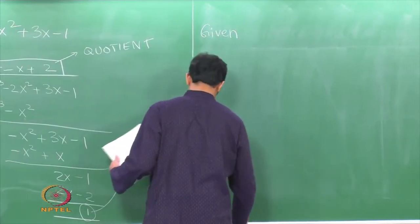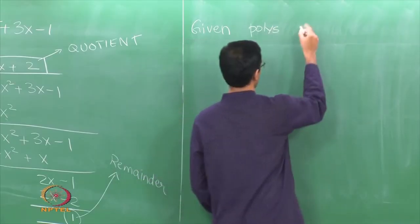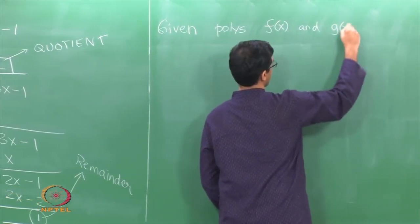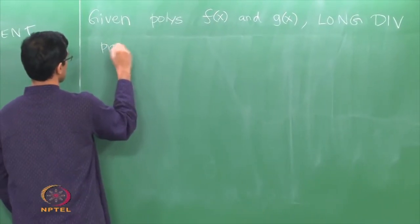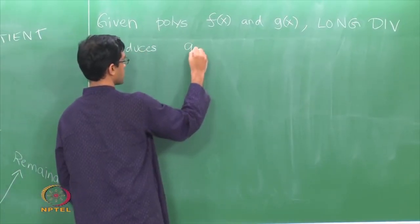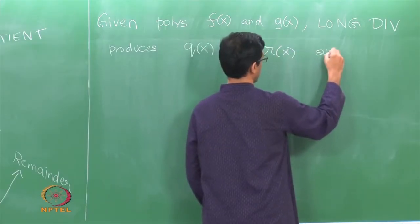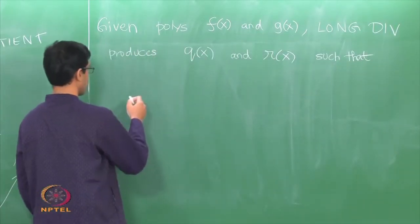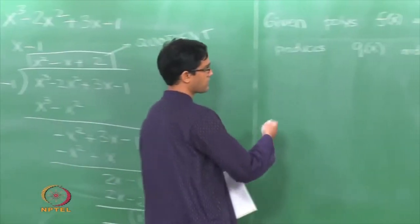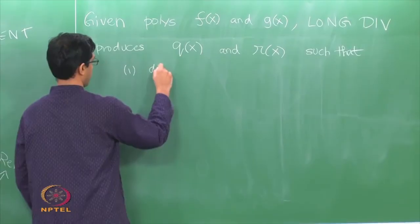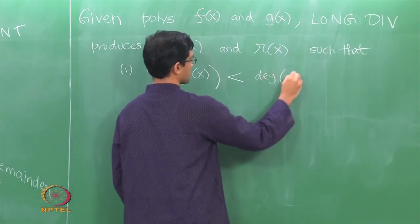So let me say what long division does. Given polynomials F of X and G of X, long division of F by G produces 2 more polynomials: Q of X, Q for quotient, and R of X, R for remainder, such that the following properties are true. The remainder is something obtained at the very last step of the division where you cannot continue anymore, so the degree of R is strictly smaller than the degree of G of X.